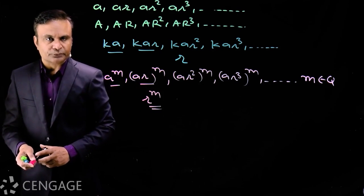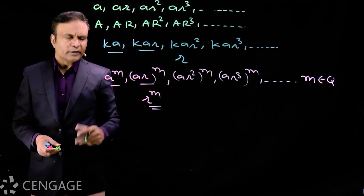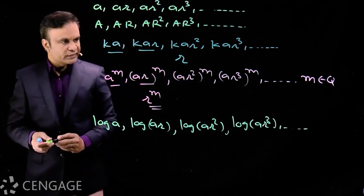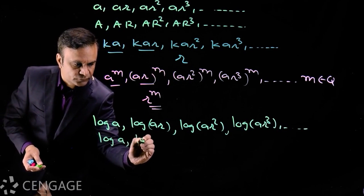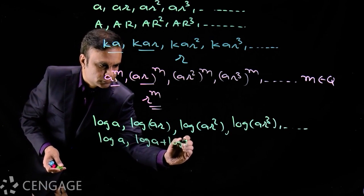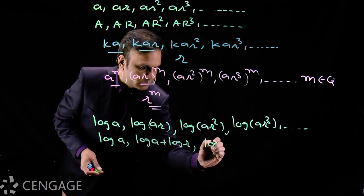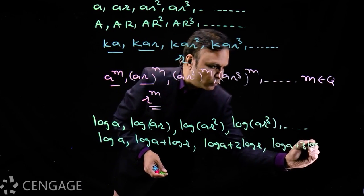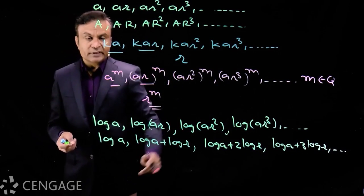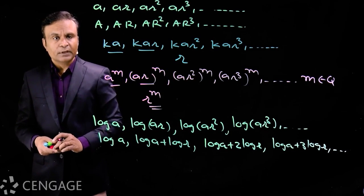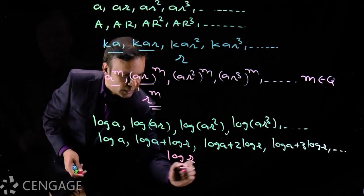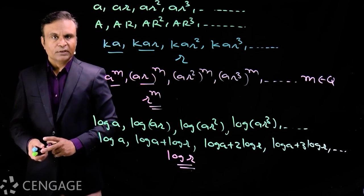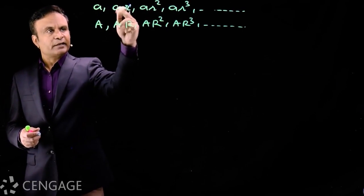Now suppose all the terms of this GP are positive. If we take the logarithm of each term, using properties of logarithm we get new terms like log a, log a + log r, log a + 2 log r, log a + 3 log r, and so on. This is clearly an arithmetic progression with common difference log r. That means if all the terms of a GP are positive, their logarithms form an arithmetic progression.